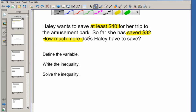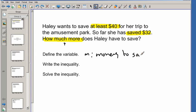All right, let's define our variable. So what we're trying to figure out is how much more does she have to save. So let's go ahead and call it M for money. All right, so that's going to be money to save.